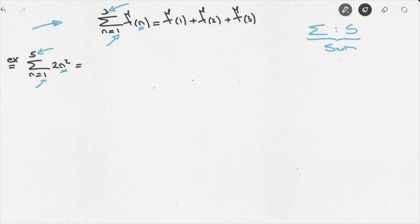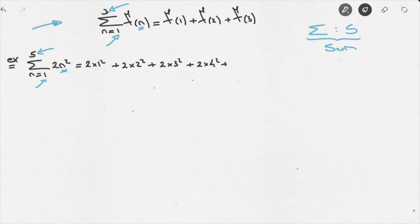Here's what that would look like. In the case where n equals 1, this would equal 2 times 1 squared. We would add to that the case when n equals 2, leading to 2 times 2 squared. We add to that the case when n equals 3, which would be 2 times 3 squared. We then add the case when n equals 4, so 2 times 4 squared. And finally, we add the case where n equals 5, so 2 times 5 squared. We stop at that term because the final value written at the top of the sigma symbol was 5.